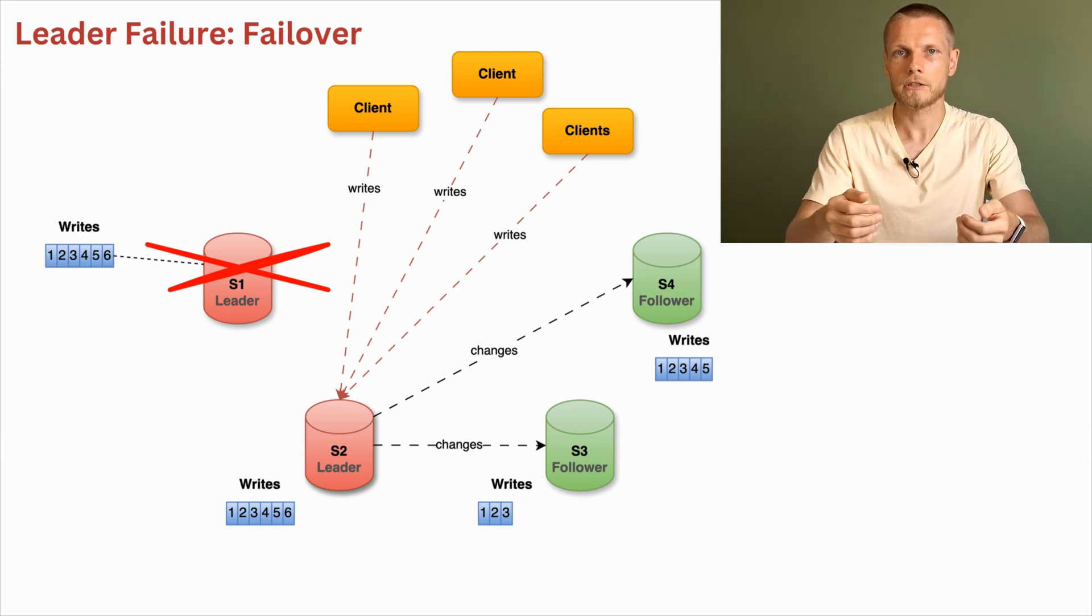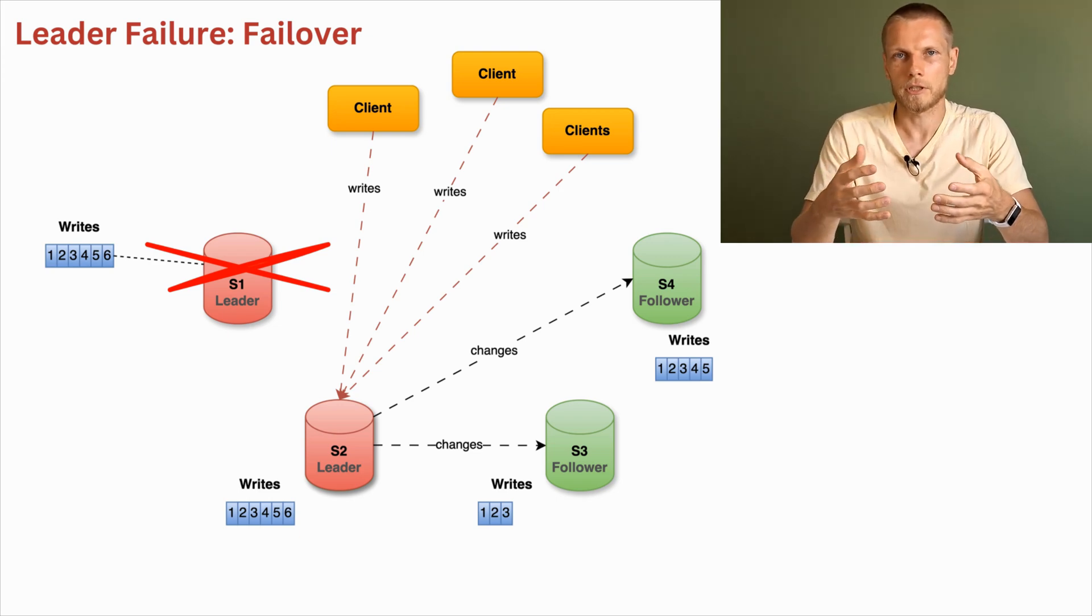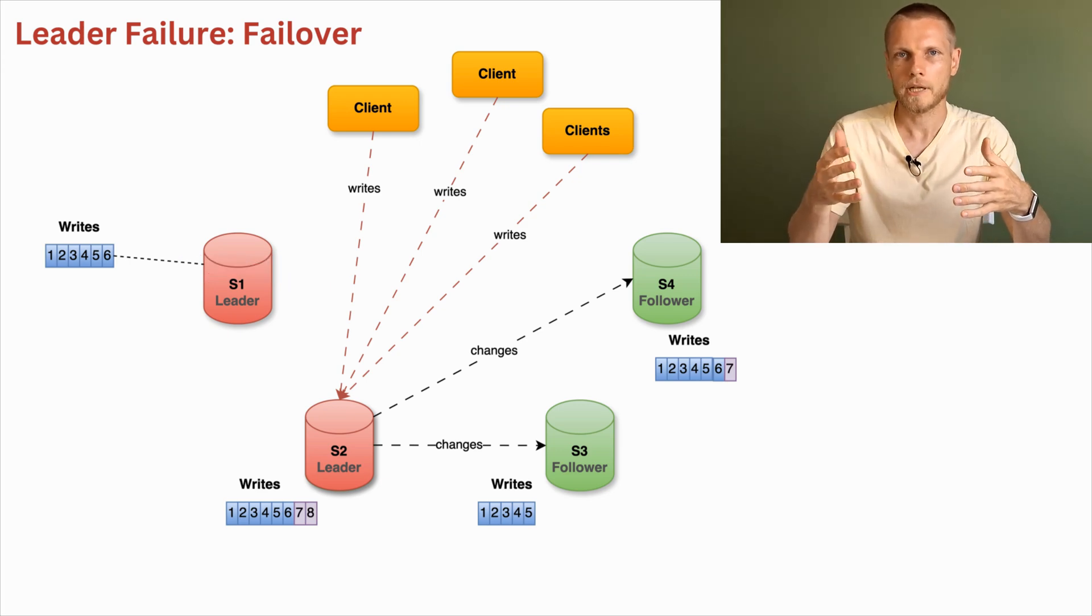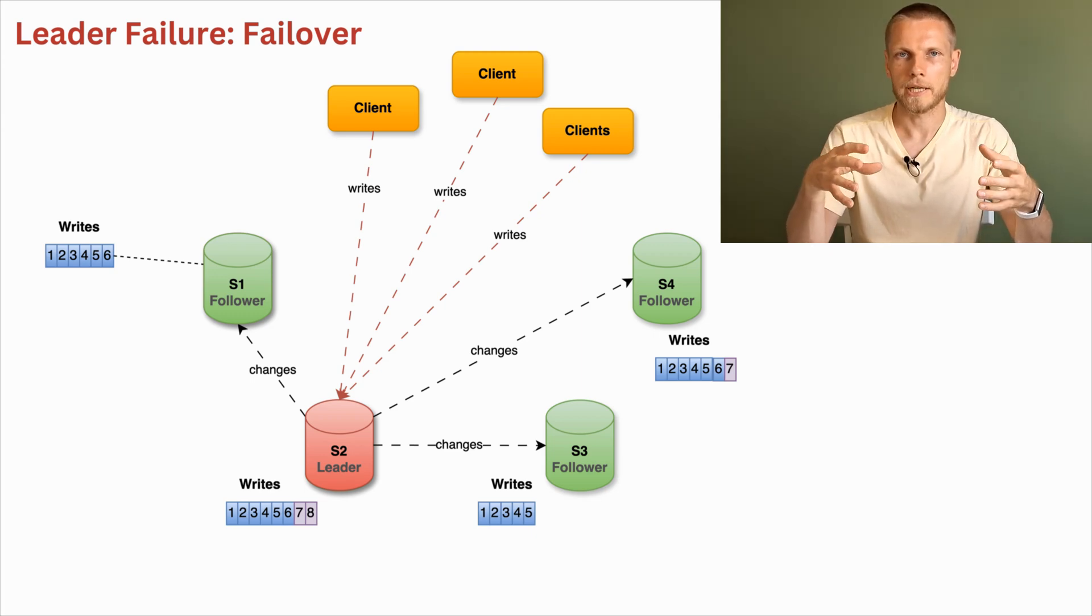But this is not yet the end of the process because old leader might come back. For example, it wasn't down. There was just a network problem and it was just cut off from the rest of the network. When it comes back, it has to detect that it was demoted, that it's not a leader anymore. So it has to detect it and step down to become a follower. When it steps down and becomes follower, it starts to process updates from the new leader.